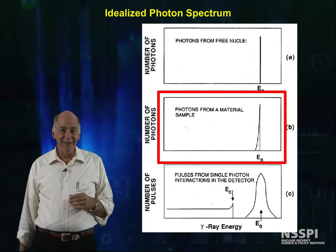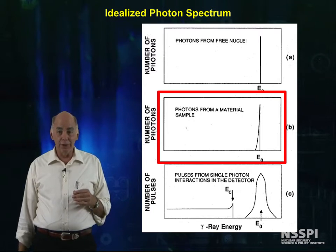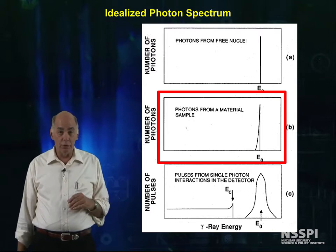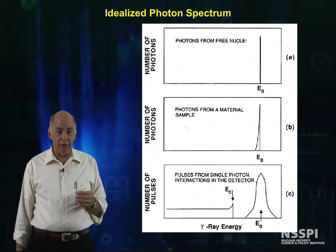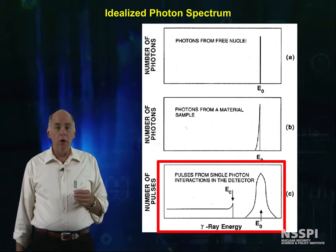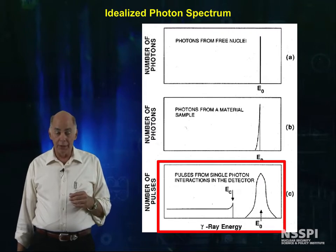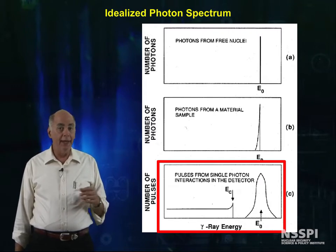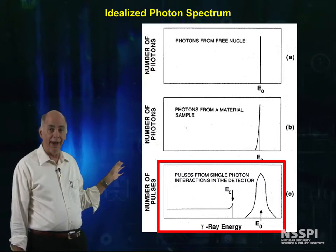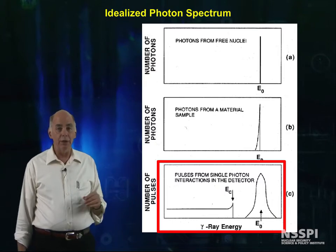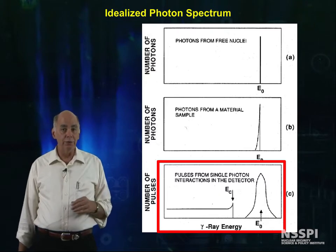Alas, in real life, the photons from the material sample will be absorbed, some of them, so you will not get the full energy back out. You don't always have photoelectric events. Sometimes you have Compton events, and they introduce noise into the signal. So we have graph C, and that's coming close to reality, to what you'll see in the lab.